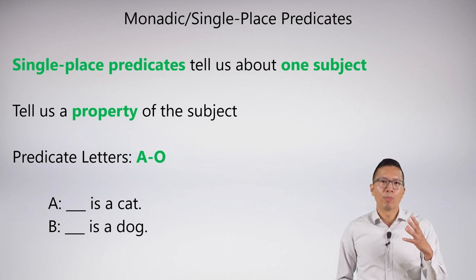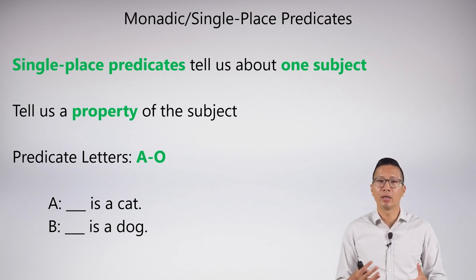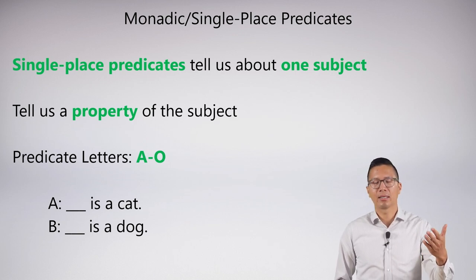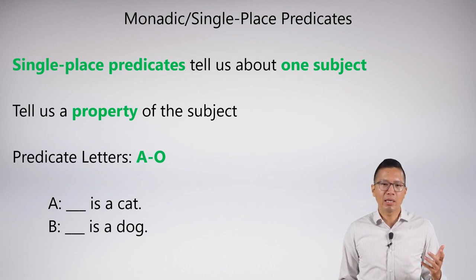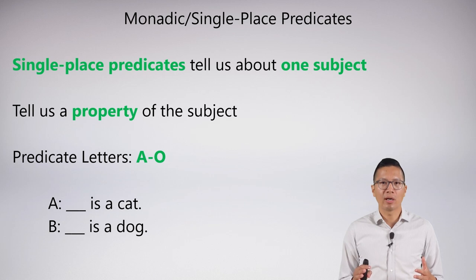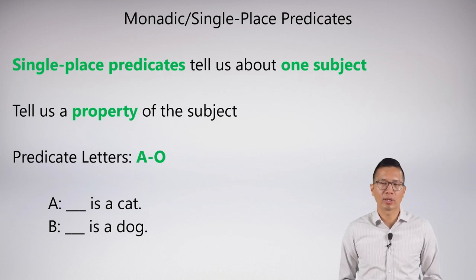Here's an example. This isn't the finished example of how predicates look, but this is just to help us get a basic idea of what's going on. I can have capital A be the predicate 'blank is a cat,' and capital B is the predicate 'blank is a dog.' You can sort of see how this works. If you put a name letter in there, then you're saying that name is a cat or that name is a dog and so on.